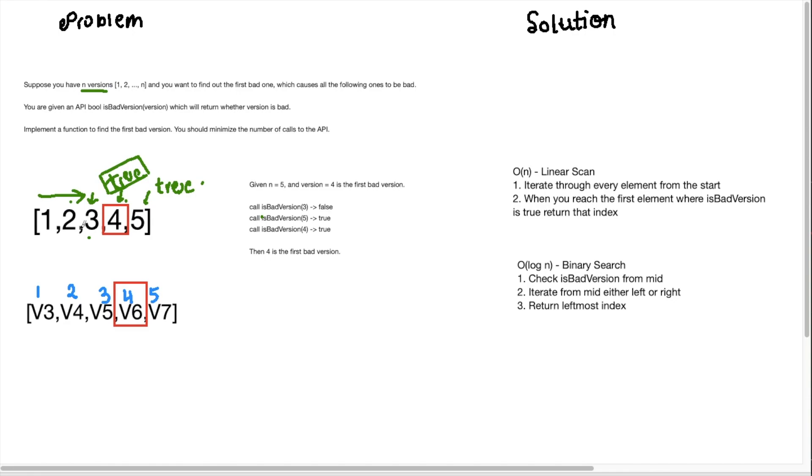However, the time complexity for this method would require more calls to the is bad version right because our worst case is if our search element was the last element, we would have to call each element in the array to get to that last version and that would take O(n) time and we would iterate through each element and we would just return when we get the first true.